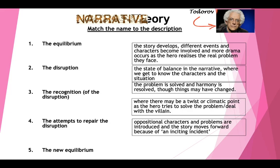Let's go through the answers. The equilibrium is where we have a state of balance. The disruption is where oppositional characters and problems are introduced. The recognition of the disruption is where the character develops. The attempts to repair is where there might be a twist or climactic point where the character tries to solve the problem. Then we have the new equilibrium, which is the new state of balance where the problem is solved.